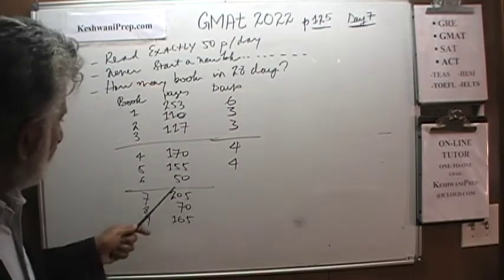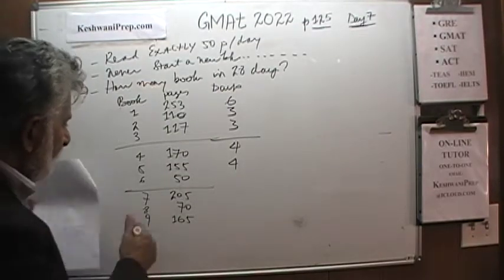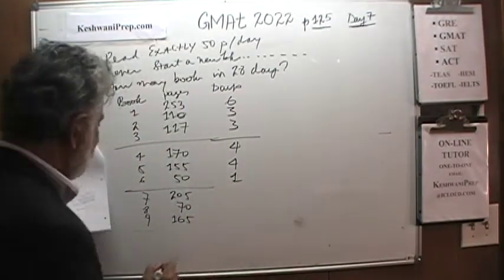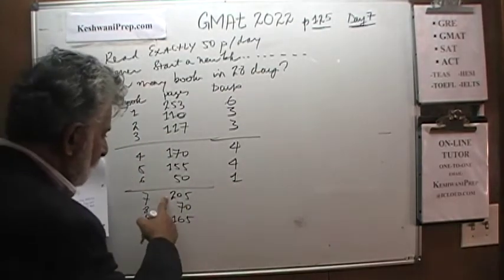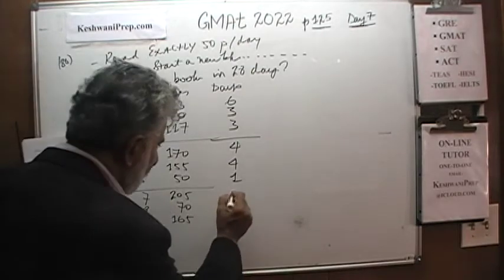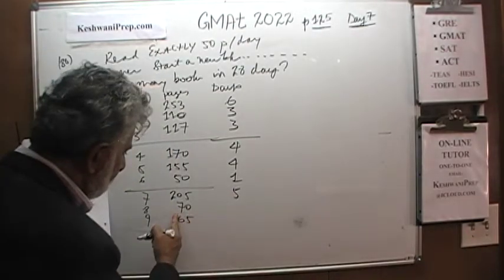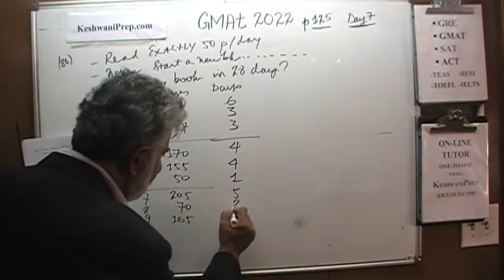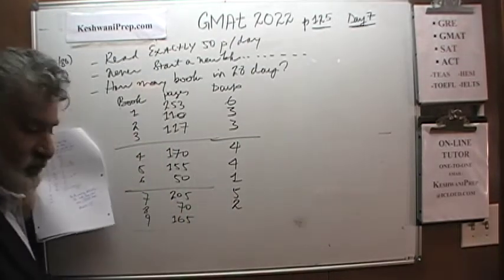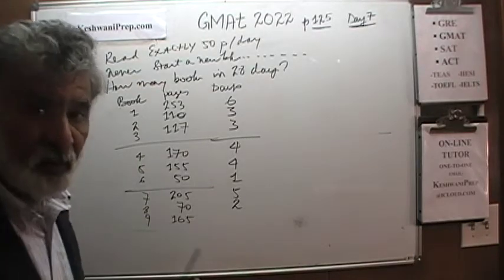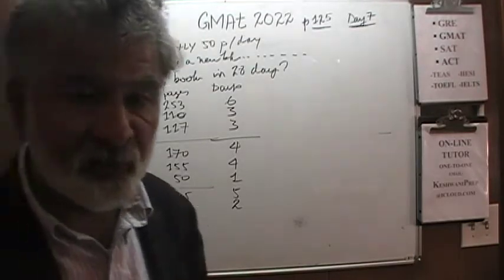Book 4 with 170 pages takes 4 days: 50 plus 50 plus 50 and then 20 more pages. Book 5 with 150 pages would take 3 days but this one takes 4 days. Book 6 contains exactly 50 pages — that takes 1 day. Book 7 with 205 pages takes 5 days. Book 8 with 70 pages takes 2 days. And 165 pages for book 9 will require 4 days: 50 plus 50 plus 50 and then 15 pages.